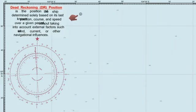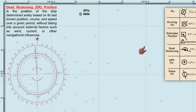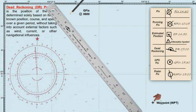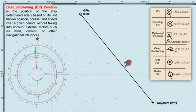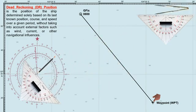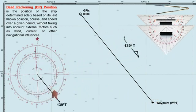Let's start by assuming this is the ship's last known position — a GPS fix at 0800 hours, marked with the standard symbol for GPS fixes. If the next waypoint is located here, draw a line from the last known position to the waypoint. This line represents our planned track towards this waypoint. Now, using a navigational triangle and compass rose, determine the course to steer. In this case, the course towards the next waypoint is 139 degrees true.